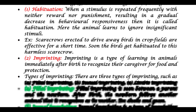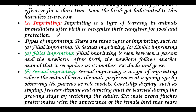Next is imprinting. Imprinting is a type of learning in animals immediately after birth to recognize their caregiver for food and protection. There are three types of imprinting. The first is filial imprinting, which is seen between a parent and the newborn. After birth, the newborn follows another animal that it recognizes as its mother. Examples include ducks and geese.